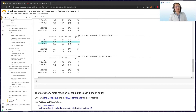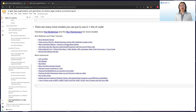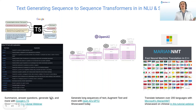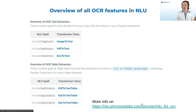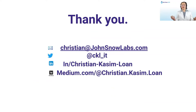Now you are equipped with a new tool that you can use in your NLP pipelines. Besides OpenAI's GPT-2, there are also many other large language models for text generation — like Google's T5 for summarization, answering questions, or generating SQL text, or Microsoft's MarianNMT to translate between 200 languages. There are more notebooks and tutorials I recommend you check out if you are curious, and many more tutorials and webinars on NLU. Finally, I would like to thank you for your attention — I'm sure you have learned a lot today. Thanks and goodbye.